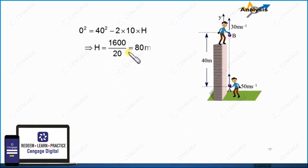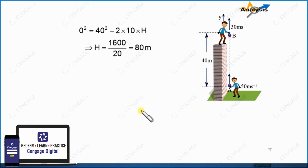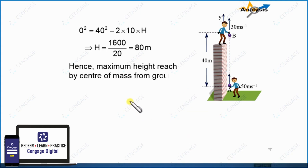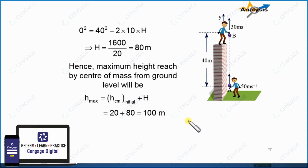Substituting the values, the capital H value will be 1600 divided by 20, that is 80 meters. We know the initial height of the center of mass is 20 meters. So the maximum height raised by the center of mass equals initial height plus capital H, which is 20 plus 80, equal to 100 meters. Therefore, the maximum height raised by the center of mass is 100 meters.